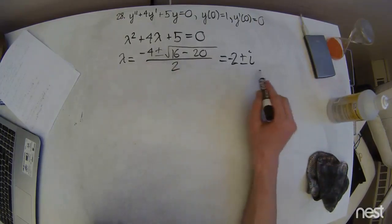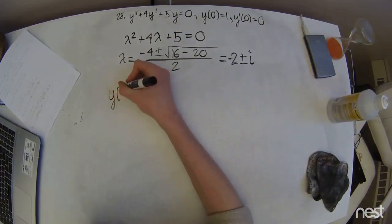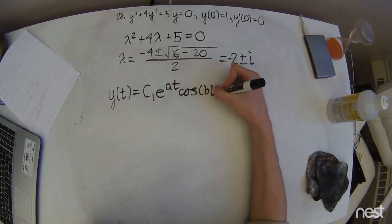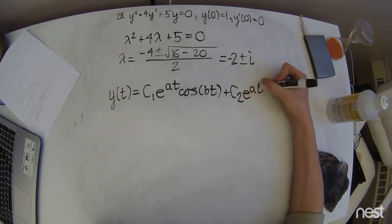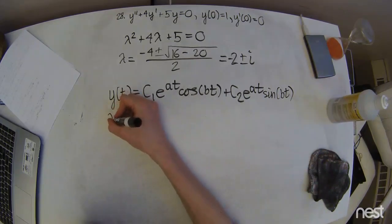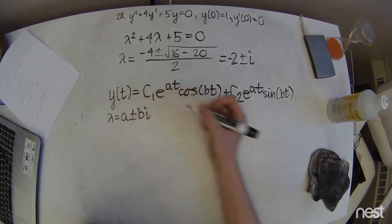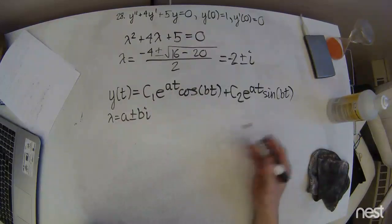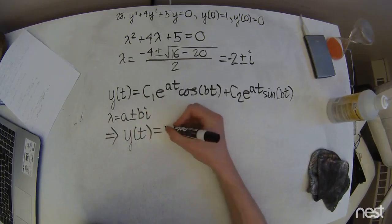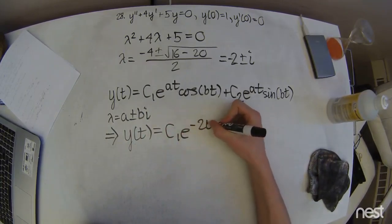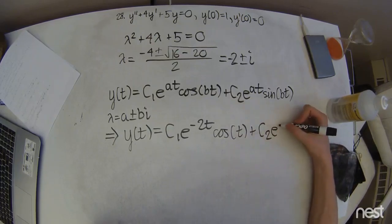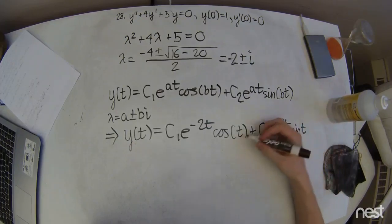Alright, so now we remember for this complex roots situation, our general form of solution is going to look like c1 e to the a t cosine of b t plus c2 e to the a t sine of b t, and the a and the b are going to come from some complex number of the form a plus or minus b i. So now we can take a as negative 2, b as 1, plug those in, and get a solution that looks like c1 e to the negative 2t cosine of t plus c2 e to the negative 2t sine of t.